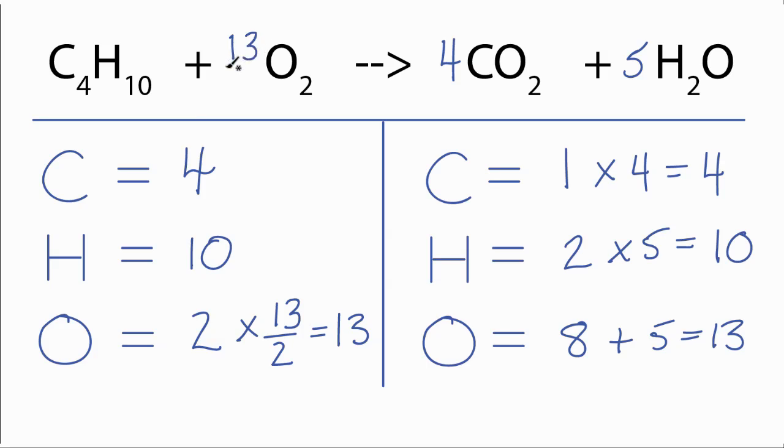And I'll put my thirteen over two up here. And with that, this equation is balanced. You may want to multiply all of the coefficients in the equation by two so that you'll have whole numbers. So two here, two times thirteen over two, that's just thirteen. Two times four gives you eight, and two times the five gives you ten.